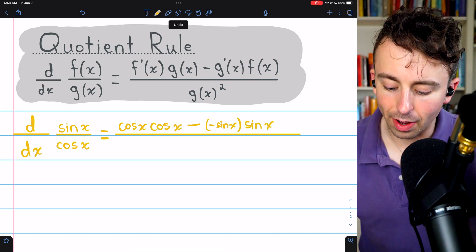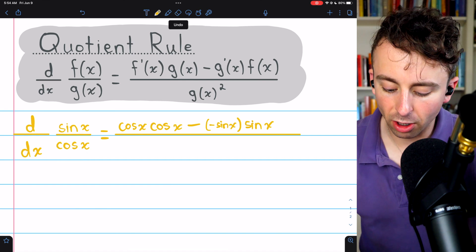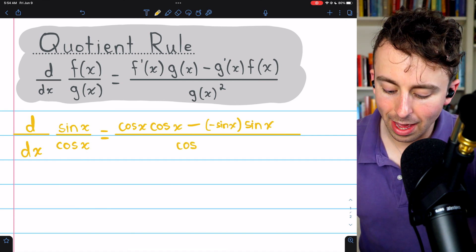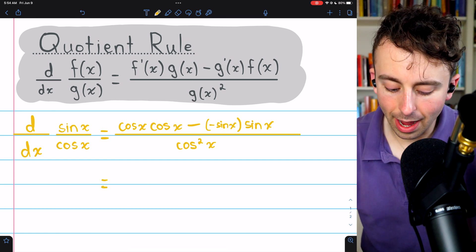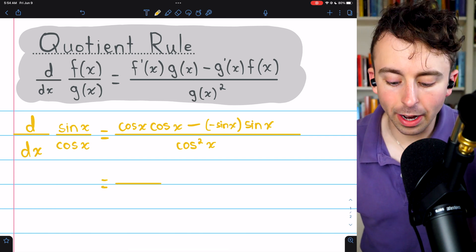Then we divide by g(x) squared. g(x) is cosine of x. So when we square that, we just get cosine squared x.